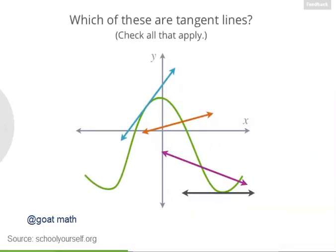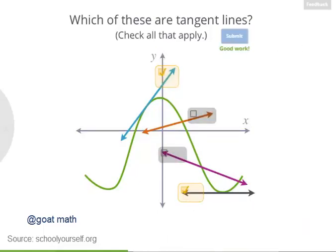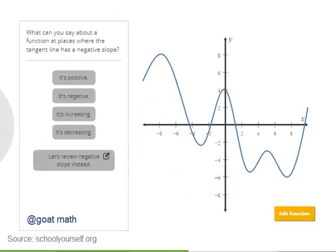Which of these lines are tangent lines for this function? Check all that apply. Here's an interactive in which you can draw your own function and then find the tangent lines for all the points on the curve.